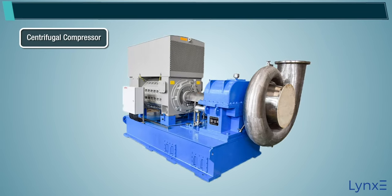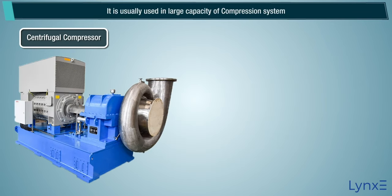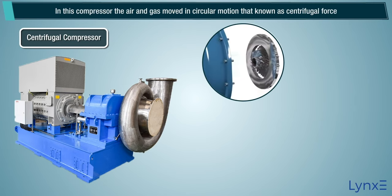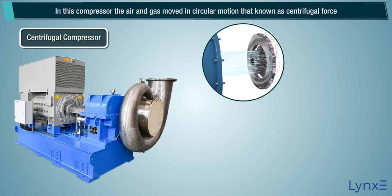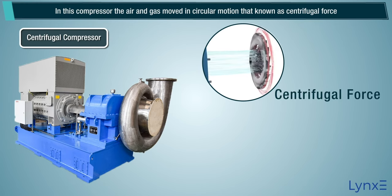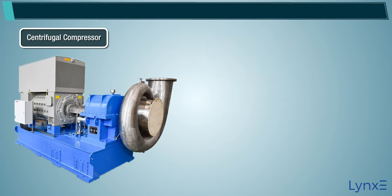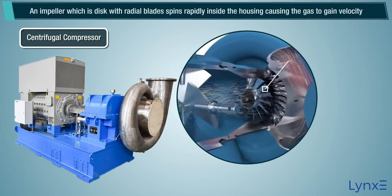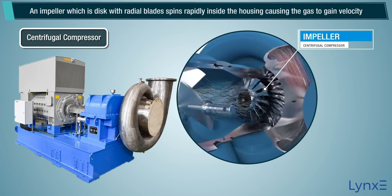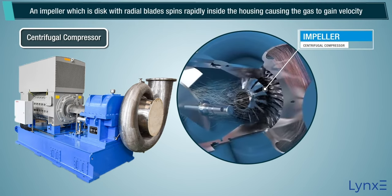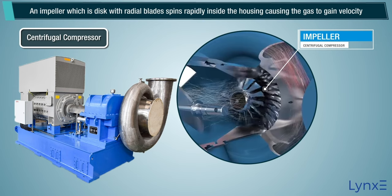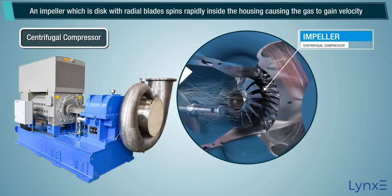Centrifugal Compressors are usually used in large capacity compression systems. In this compressor, the air and gas move in a circular motion, known as centrifugal force. An impeller, which is a disk with radial blades, spins rapidly inside the housing, causing the gas to gain velocity.